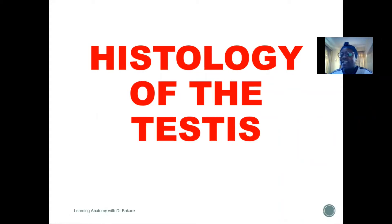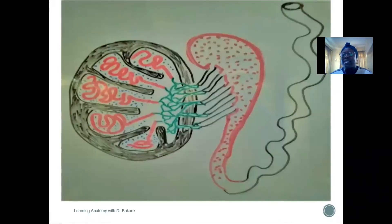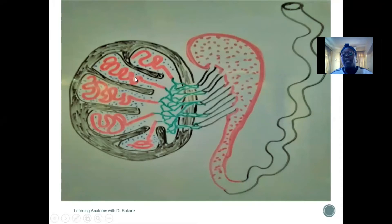Welcome. Let's look at the histology of the testes. We've described the testes as one of the external genitalia organs in the male. It is located in the scrotum, and this is the gross configuration of the testes. It is divided into about 200 lobus, and each of the lobus contains about one to four seminiferous tubules. These are the seminiferous tubules.